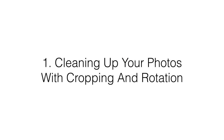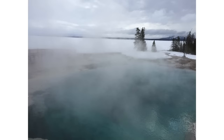Let's get started. The first technique is cleaning up your photos with cropping and rotation. This might sound like a basic technique, but we'll get into more advanced techniques towards the end of the video. This is such a core part of editing that it's important to really understand why it matters. The image you're looking at now is a photo taken at Yellowstone National Park last winter, and you'll notice that the horizon is not straight — it's slanted as we move from left to right. The image also doesn't have a clear focal point.